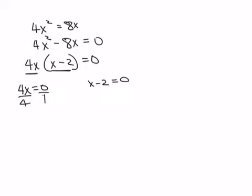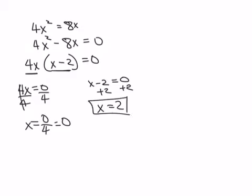So 4x equals zero and x minus 2 equals zero. I divide by 4, cancel. X equals zero over 4, which is equal to zero. X minus 2 is zero. Add 2 to both sides to get the x by itself. And I get two answers there. X is zero and x is two.